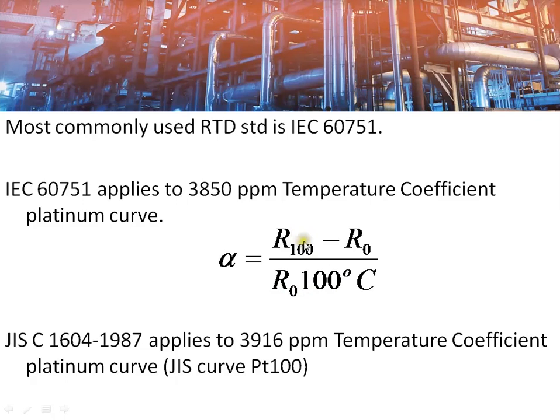The equation is: R100 minus R0, divided by R0, multiplied by 100 degrees centigrade, where R100 is the resistance at 100°C and R0 is the resistance at 0°C. Other standards are available for RTDs, like GC 1604-1987, which applies to platinum RTDs with a 3916 ppm temperature coefficient of resistance. Later versions of that standard also conform to IEC 751. Other temperature coefficients of resistance used for platinum RTDs are 3750 ppm and 3770 ppm.